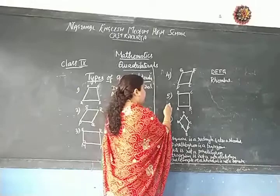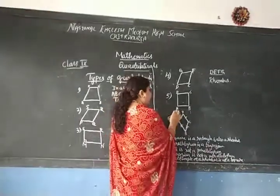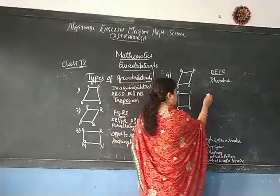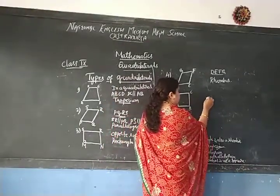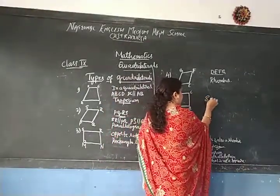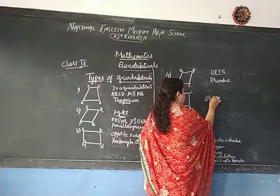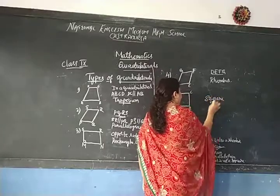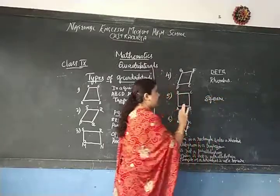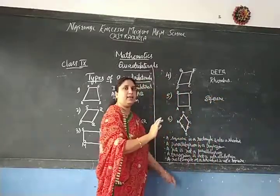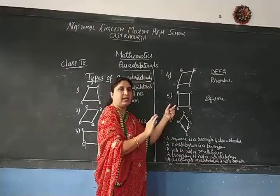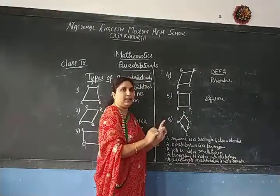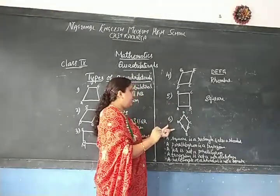Now, look at figure five. Here, this quadrilateral ABCD is called as the square. In a square, all the sides are equal and all the angles are equal.